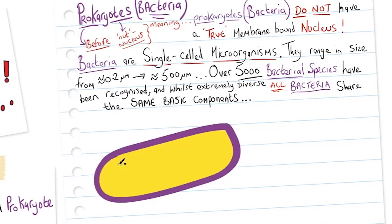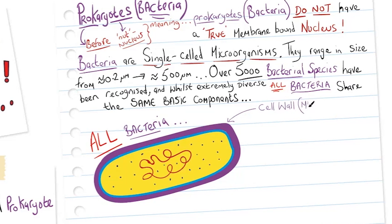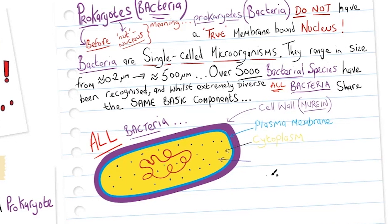As we can see in my drawing here, all bacteria will have a cell wall which is composed of a glycoprotein called murein, sometimes referred to as peptidoglycan. They also have a plasma membrane — the same phospholipid bilayer that all cells have — and cytoplasm where chemical reactions take place.